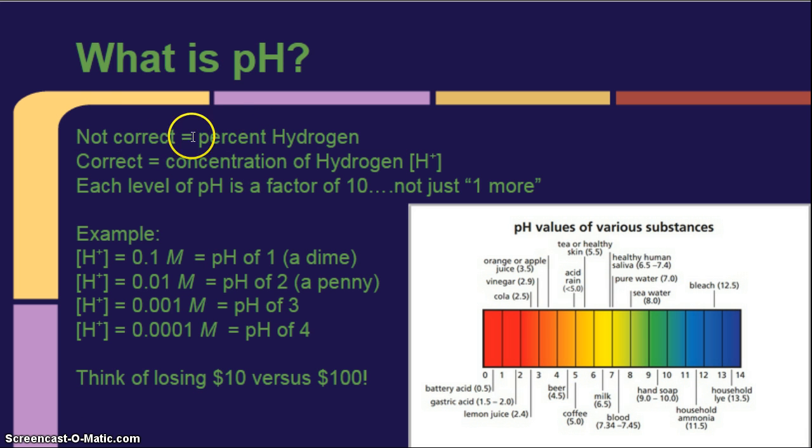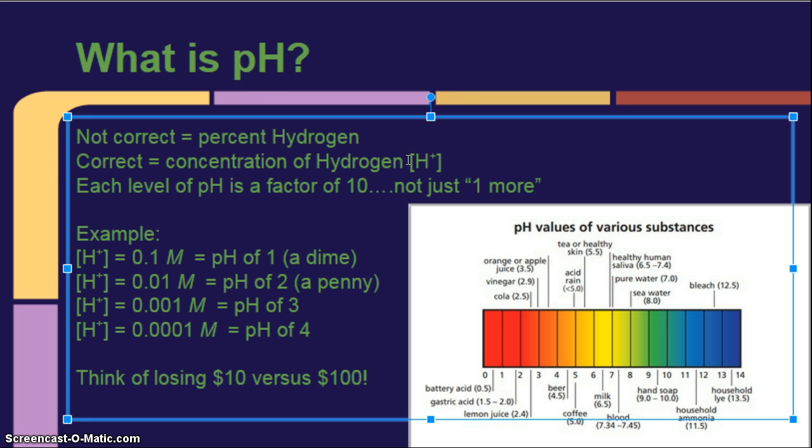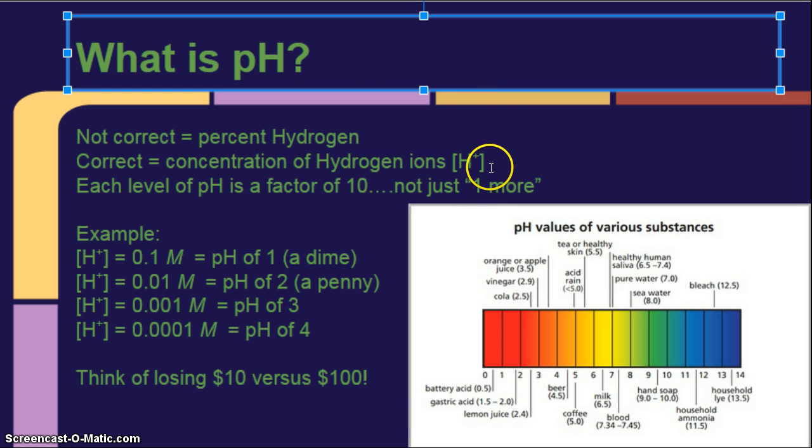Alright, so what is pH? Remember, it's not correct that it's percent hydrogen or portion hydrogen, but it's kind of a good way to think of it when you're in a pinch, because the H does stand for hydrogen. The correct thing is it's the concentration of hydrogen ions, which we abbreviate as H+, with these brackets around it, and these brackets are pronounced concentration of. Each level of pH is a factor of 10, not just one more.